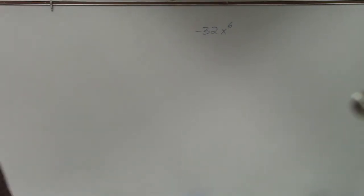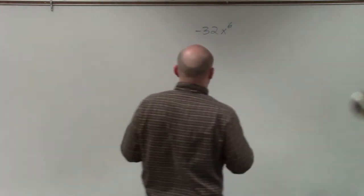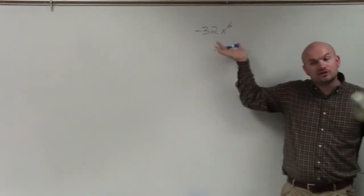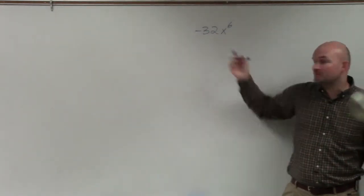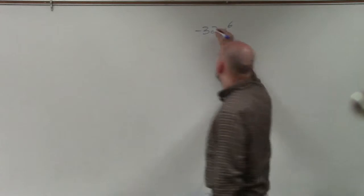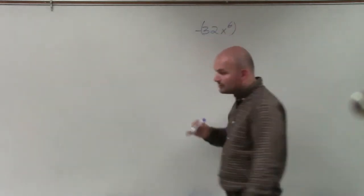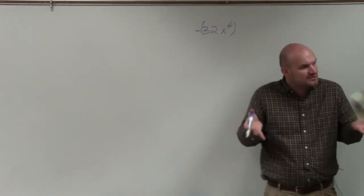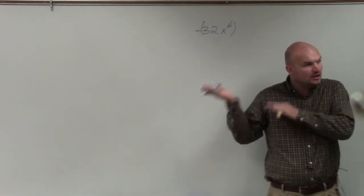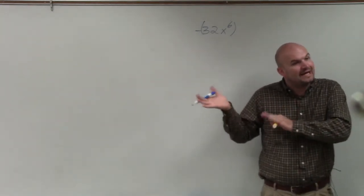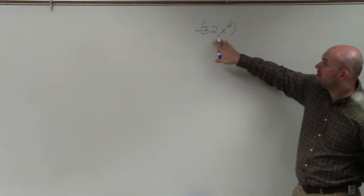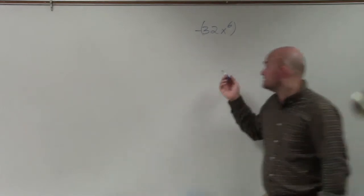For a problem like this, basically what we want to do is, first of all, we're looking at the prime factorization. We only really are concerned about the number, not really the value. I'm just going to put those around in parentheses. The negative is not really going to affect us, but we'll still write it in at the end. We're going to focus on linear factorizing 32 and x to the sixth.